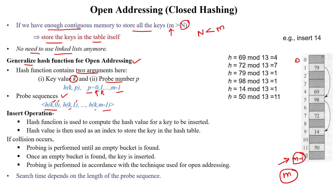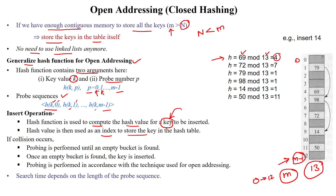The insert operation computes the hash value for a given input key. Based on the hash value, that index is used to store the input key in the hash table. For example, the table size is 13, so indices go from 0 to 12 — 13 buckets available. The input key is 69: 69 mod 13 gives index 4, so 69 is inserted at index 4. Next, inserting 72: 72 mod 13 gives 7, so 72 is inserted at index 7.